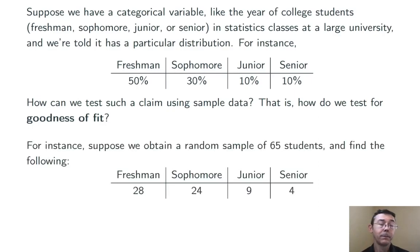For instance, suppose we obtain a simple random sample of size 65, 65 random college students from this university. And suppose that we find 28 freshmen, 24 sophomores, 9 juniors, and 4 seniors.